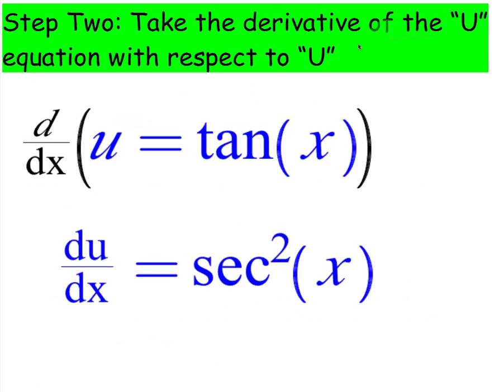Step 2, you're going to take the derivative of u, so of your u equation. Take d dx of both sides, basically, so you're going to get du dx equals secant squared. And again, for the next step, you have to get dx by itself, so you will cross-multiply.